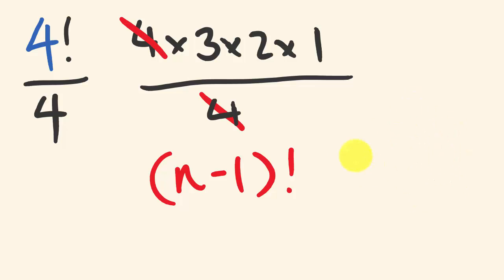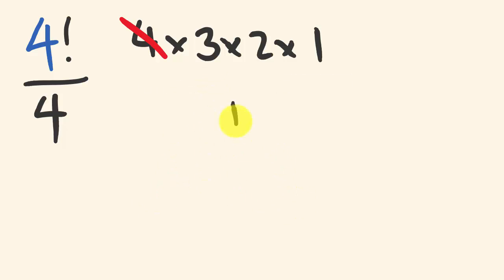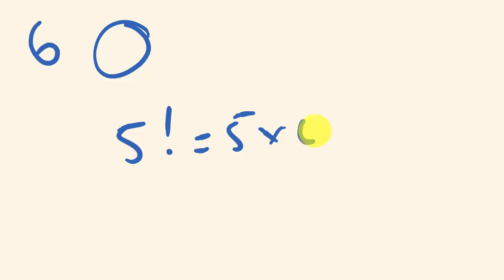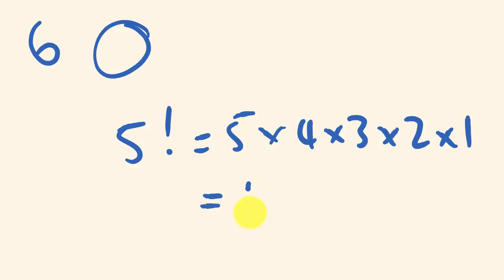For example: how many different ways can we arrange six people in a circle? Six take away one is five factorial — five times four times three times two times one — which is 120. Those are the different types of permutation questions, and they make really good sense when you think about them. Thank you for watching. Hope you found this video informative. See you next time.